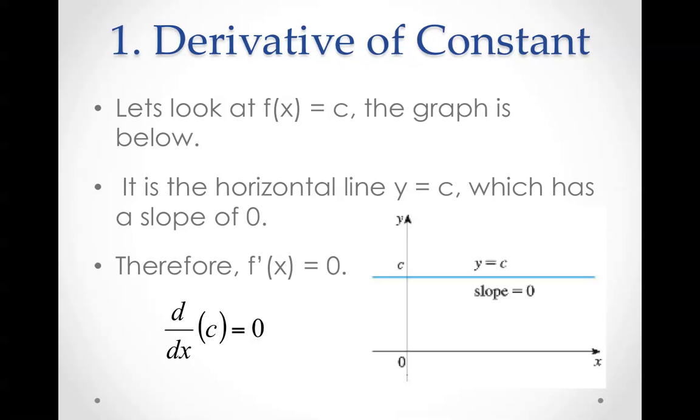Let's look at f(x) equals c. The graph is a horizontal line at y equals c, which has a slope of 0. Therefore, that is why the derivative of c equals 0, because the derivative is a slope.